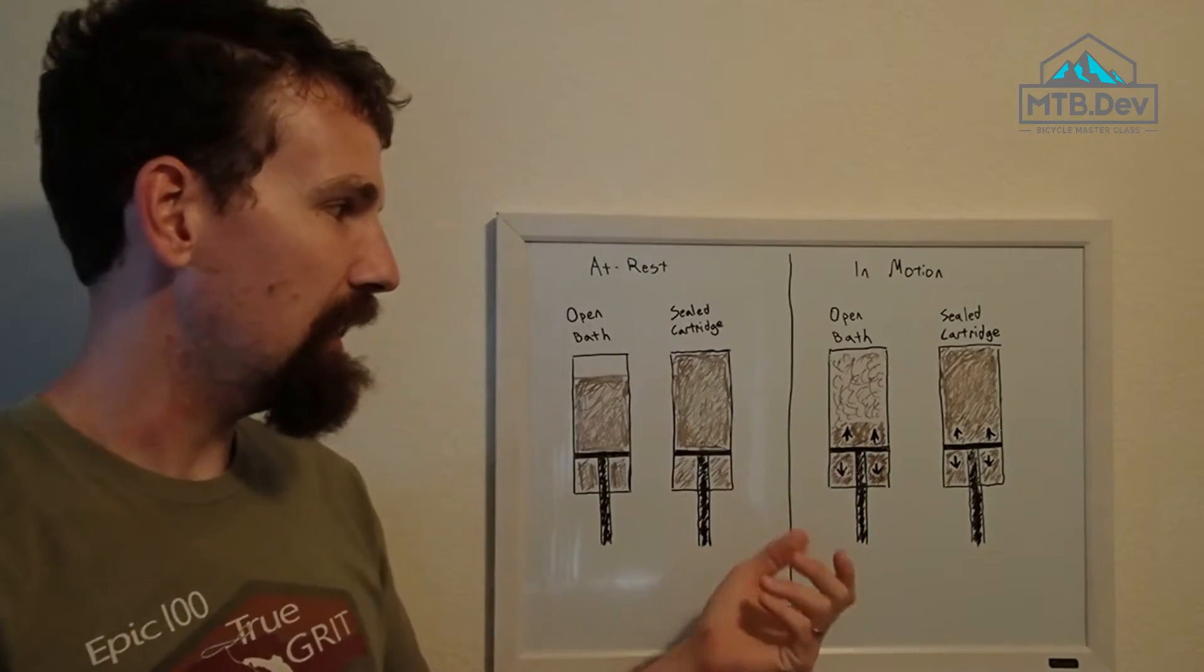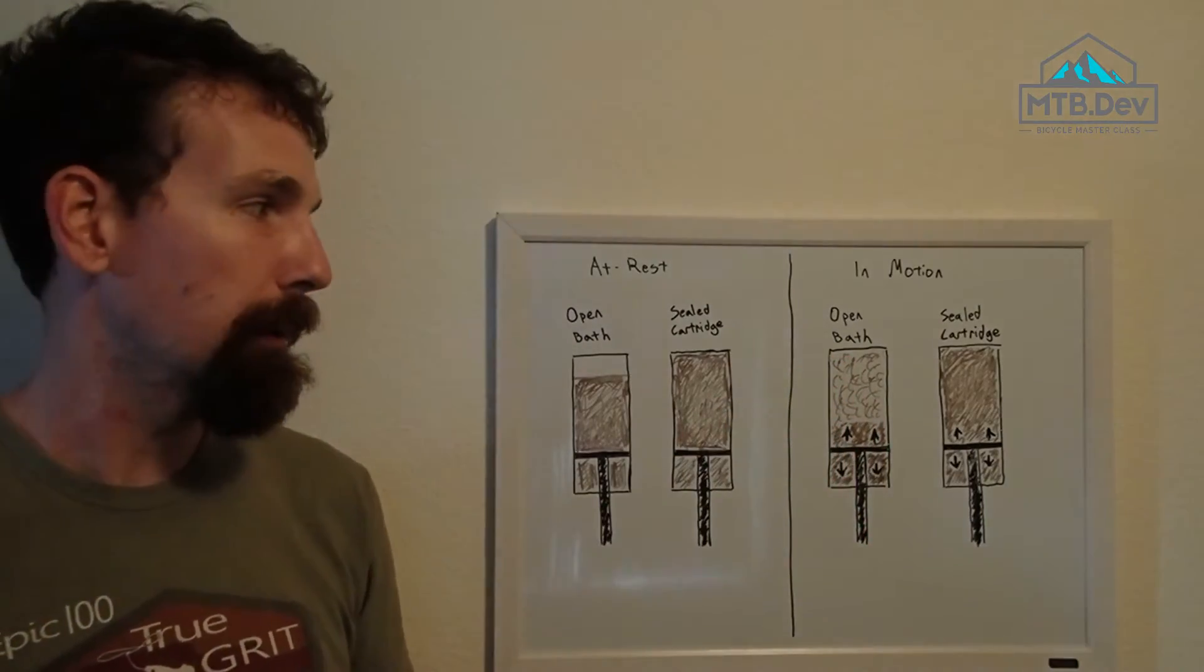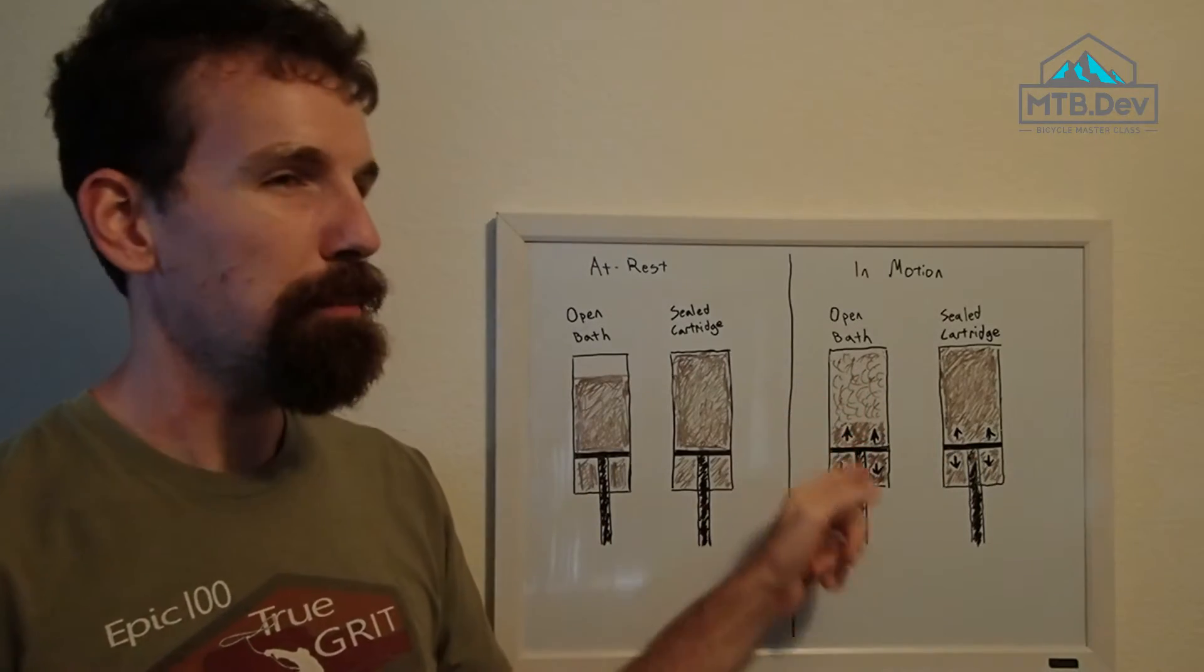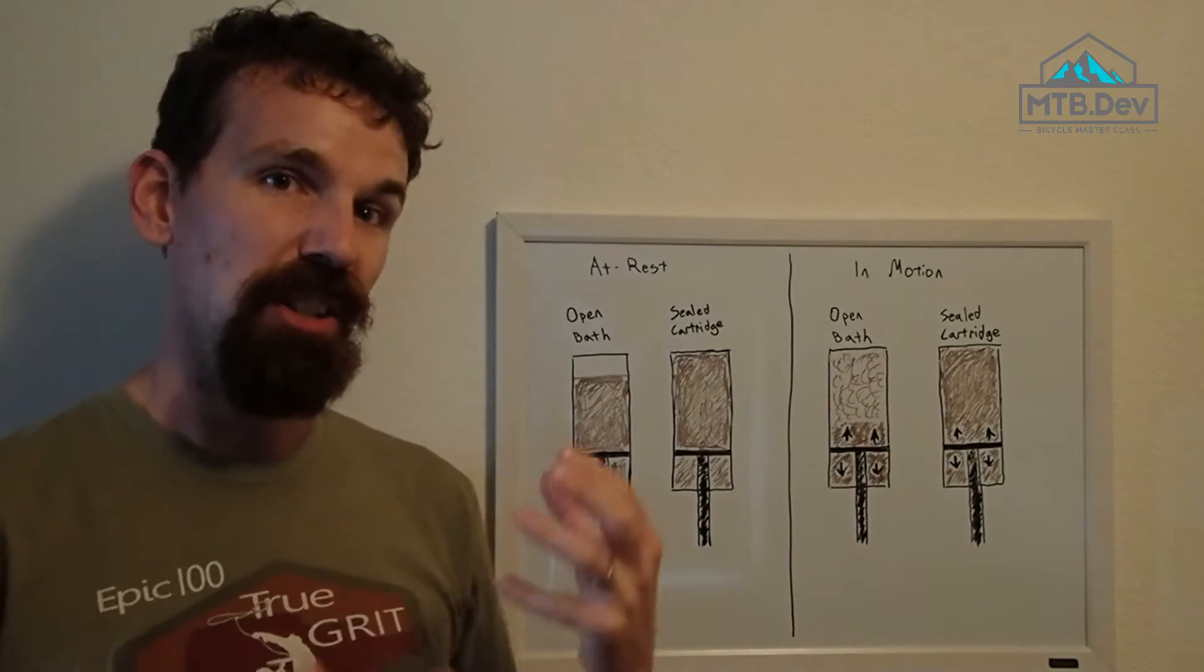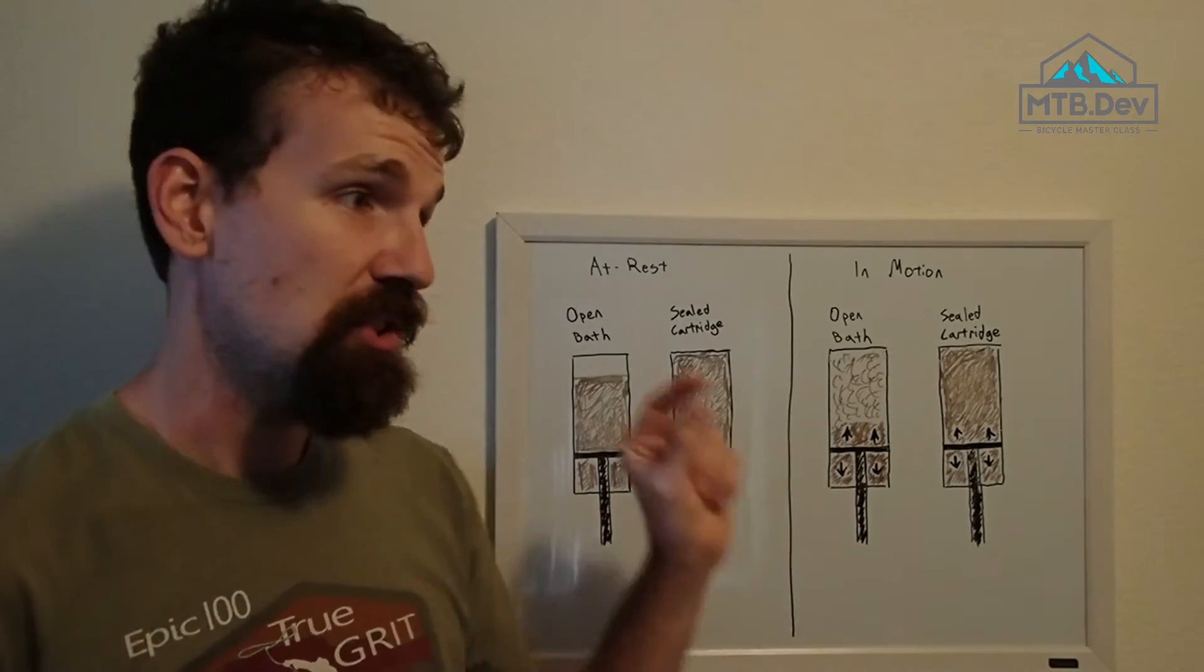But the big downside is that performance changes greatly as the air mixes with the oil. Because of this, the valving for the compression is designed around this foamed up state of operation, and the rebound valving is generally housed very low in the body so that the oil is least affected by the air in that area.